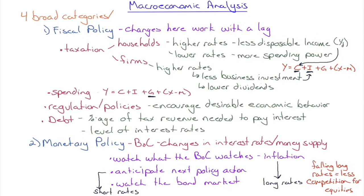When engaging in macroeconomic analysis, there are four categories to examine. Number one is fiscal policy — what your government does. Changes here tend to work with a lag because they don't trickle through to the entire economy right away.